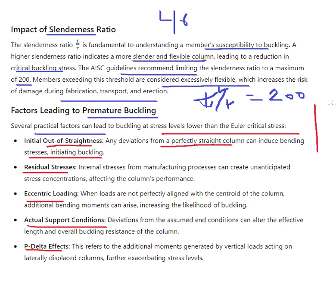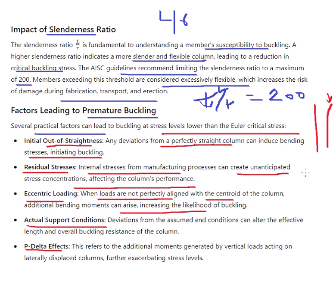If there are imperfections, they can induce bending stress and initiate buckling. Regarding eccentric loading: when loads are not perfectly aligned with the centroid of the column, additional bending moments can arise, increasing the likelihood of buckling. If the load is eccentric rather than centric, it will cause additional bending moments that increase the likelihood of buckling.